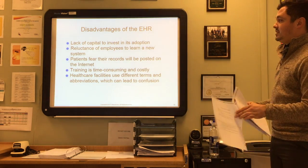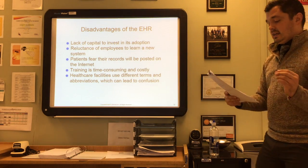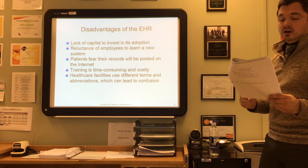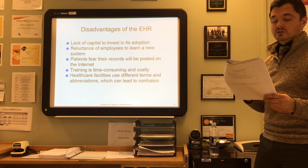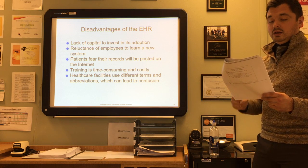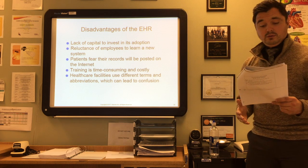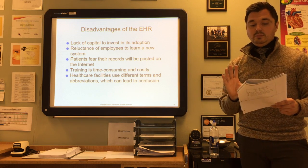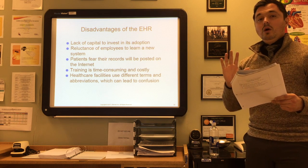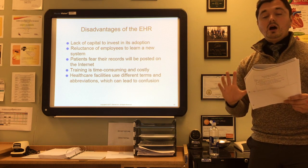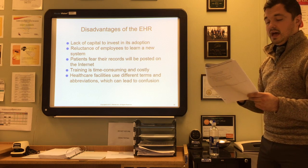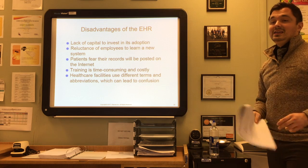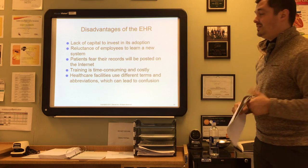Some disadvantages include the lack of capital investment in adoption. An article in Health Affairs suggests that the startup cost for a five-provider practice is approximately $162,000, with $85,000 of that going toward maintenance and costs during the first year. It is very expensive to get established — $162,000 on average to get this up and running.